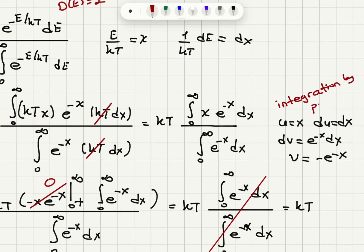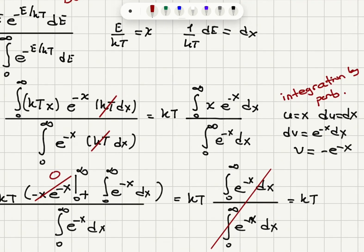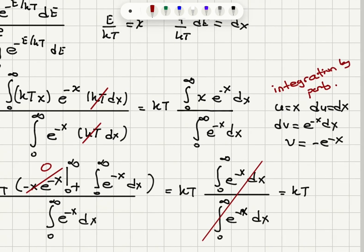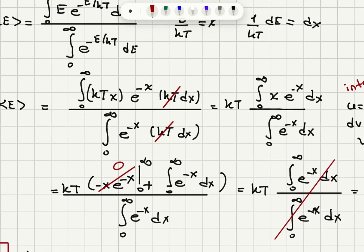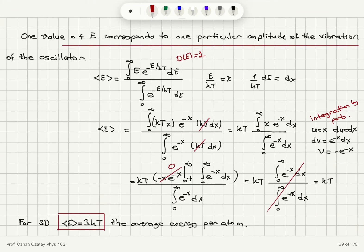I can do integration by parts. So u equals x, du equals dx, dv is e to the minus x dx, v is minus e to the minus x. So it's going to be uv minus integral v du. We have x minus e to the minus x minus integral plus e to the minus x dx. So integral from 0 to infinity minus x e to the minus x, e to the minus infinity gives us 0. On the other limit, I will have 0 from x. So we have the integral 0 to infinity, e to the minus x dx divided by itself. They cancel. The answer is kt.